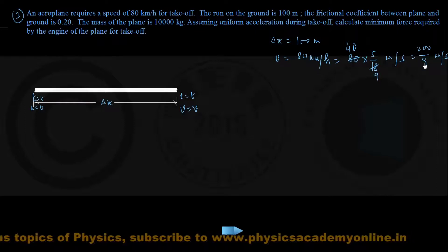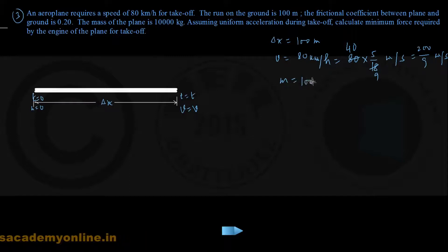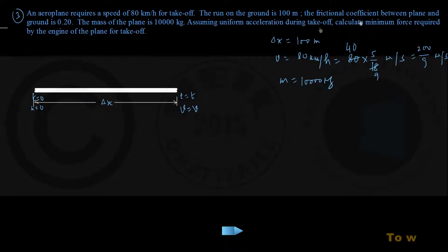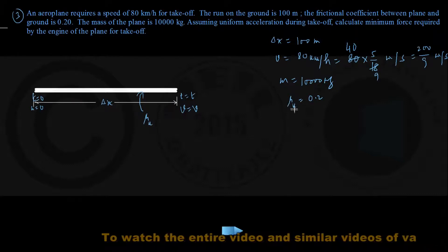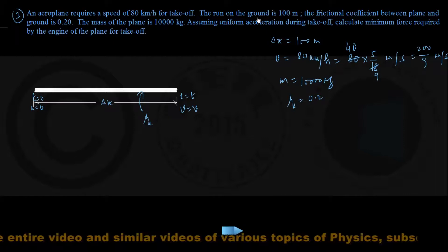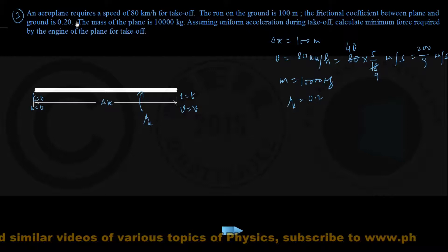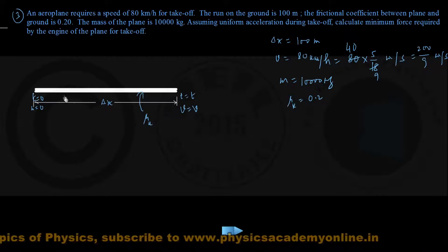We treat the plane as a particle. The mass of the plane is 10,000 kg. There is friction between the aeroplane and the runway. The coefficient of kinetic friction, mu_k, is 0.20. Let's verify the data: takeoff speed listed, length of runway 100 meters noted, coefficient of friction mu_k written down, and mass of the plane recorded. All data has been accounted for.